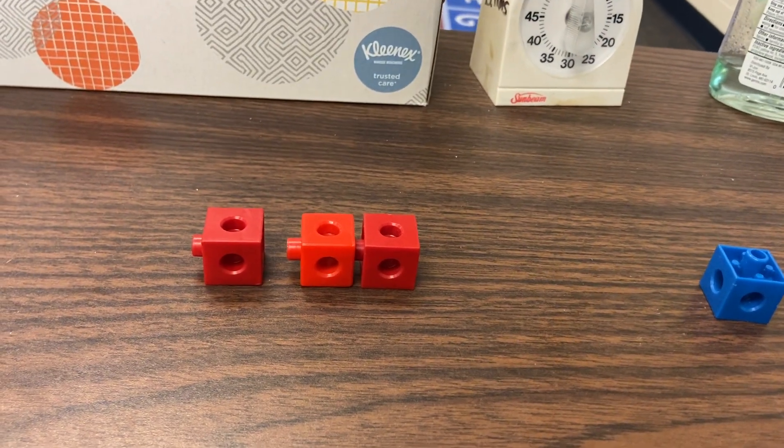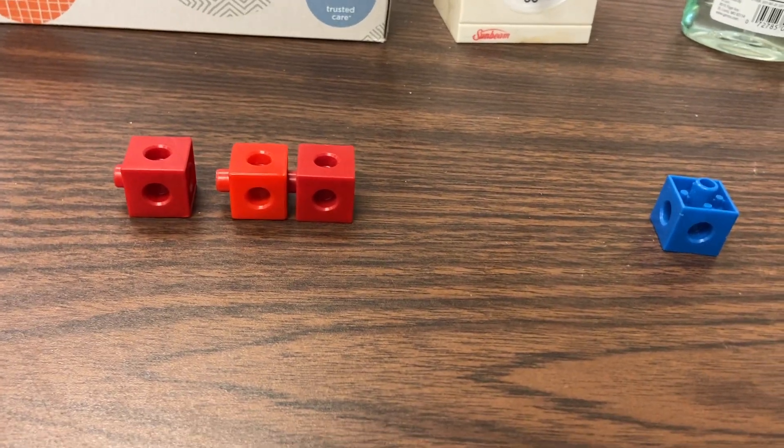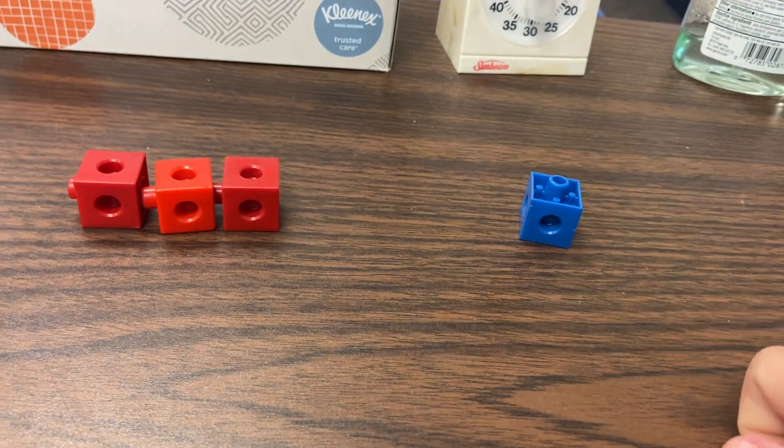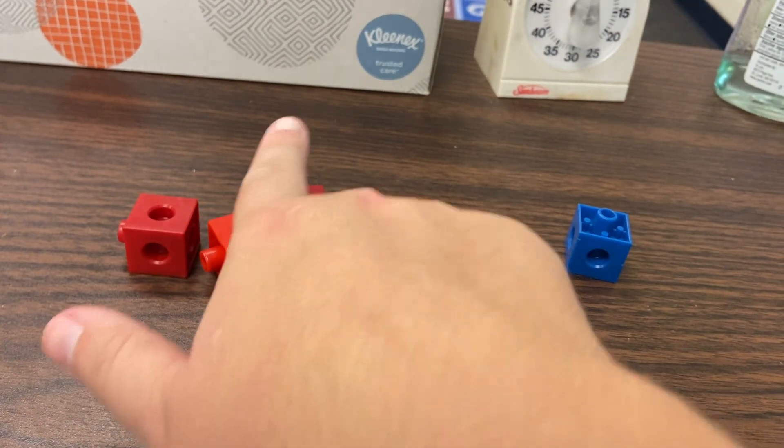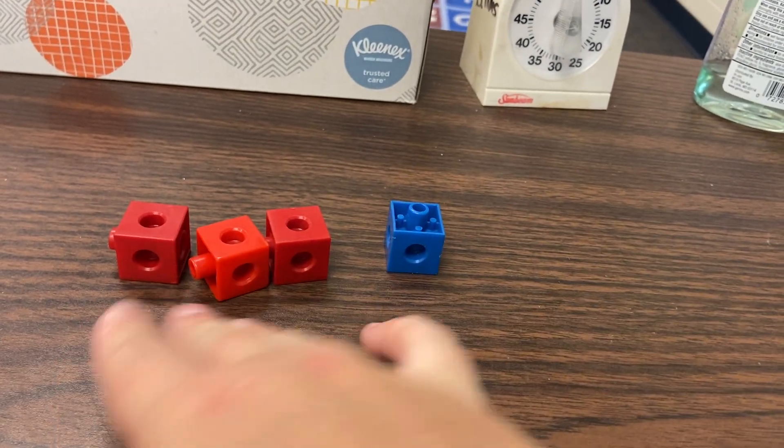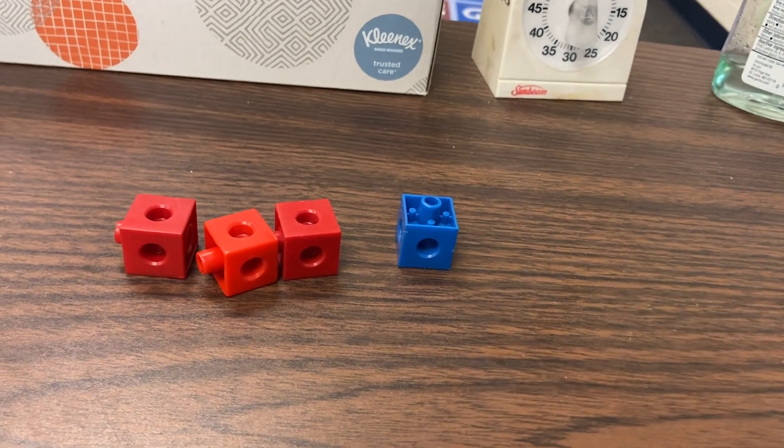How many dogs are there all together? There are three here and one there. So one, two, three, four. Three and one is four.